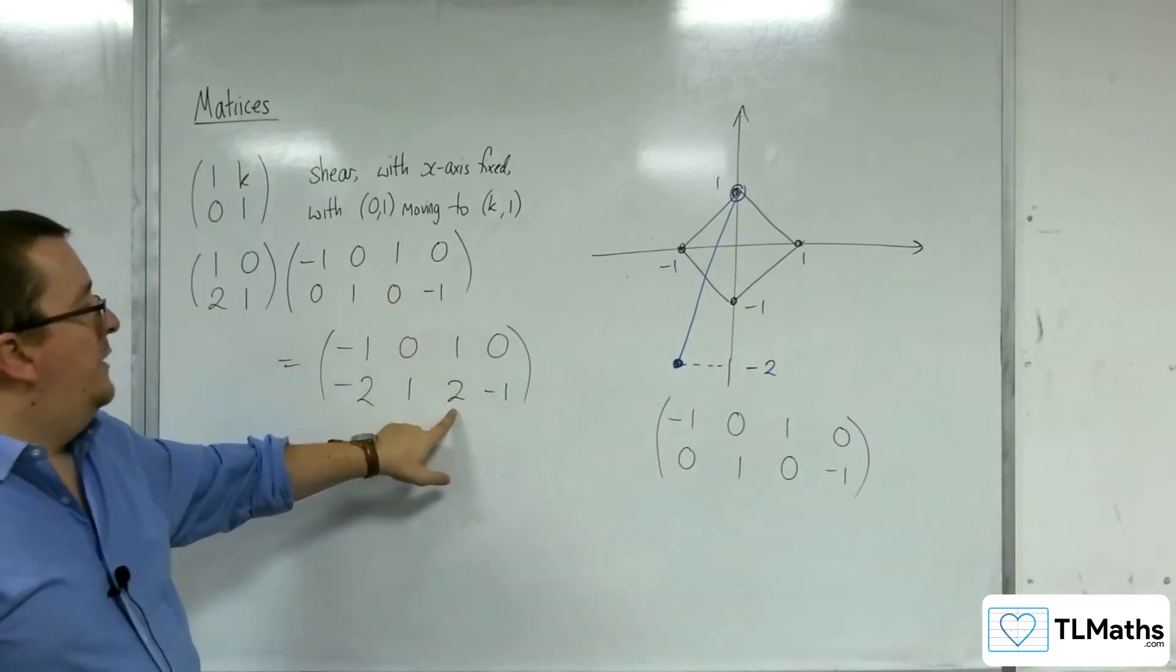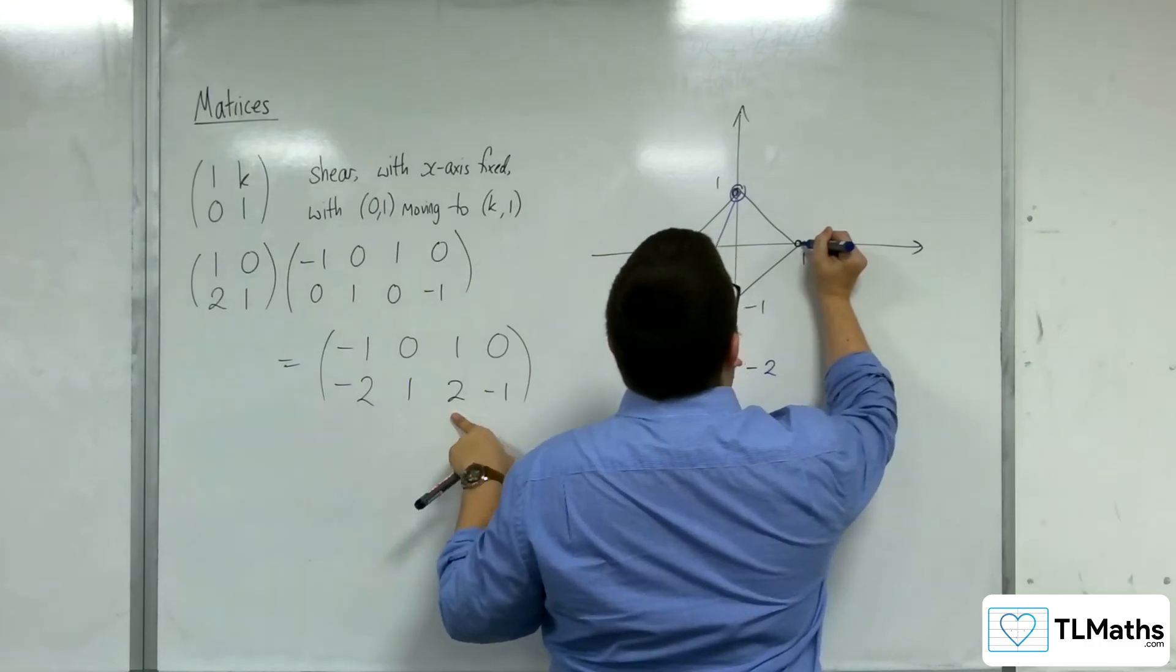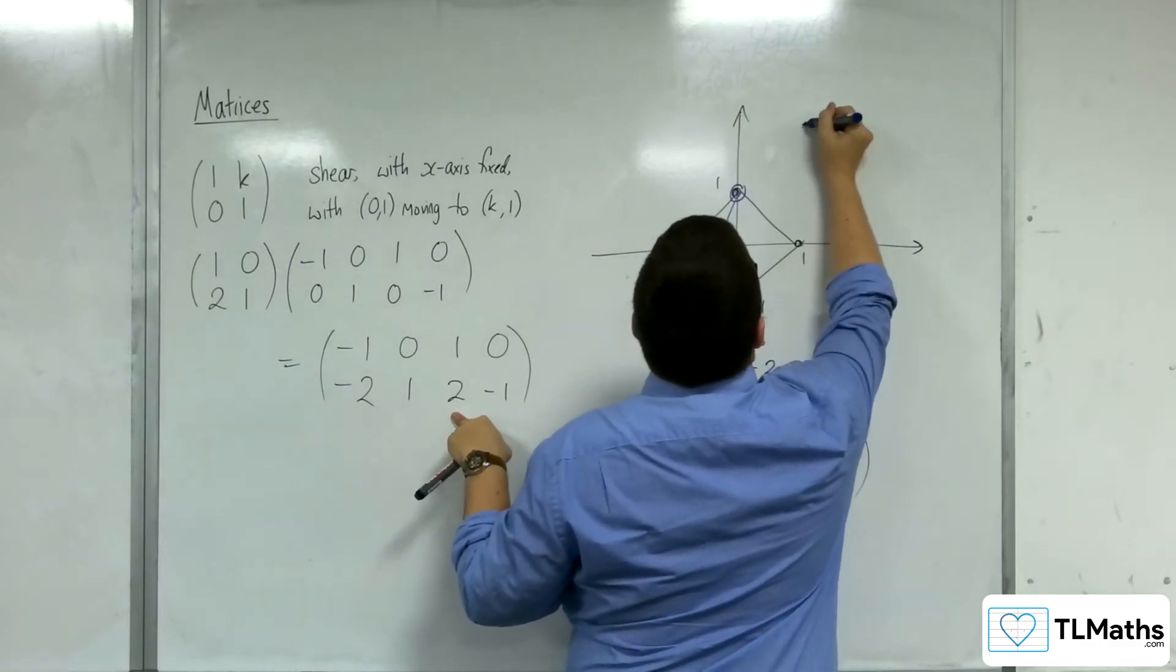1, 0 is going to 1, 2. So 1, 0 is going to 1, 2. So up here.